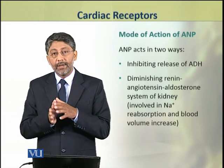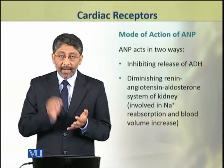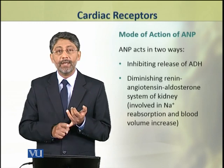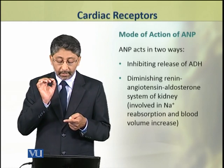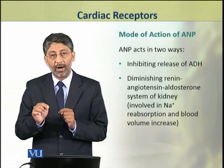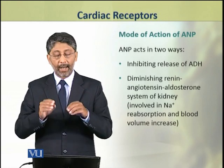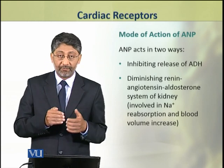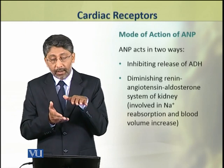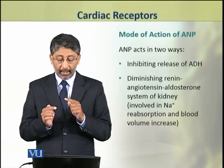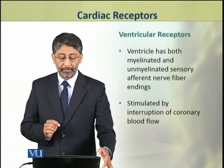Now we shall discuss the mode of action of atrial natriuretic peptide hormone. It acts in two ways: by inhibiting the release of anti-diuretic hormone, and by diminishing the renin-angiotensin-aldosterone system of the kidney. This system is involved in sodium ion reabsorption and increase in the volume of the blood. When it gets inhibited, urine production is increased and blood volume is reduced.